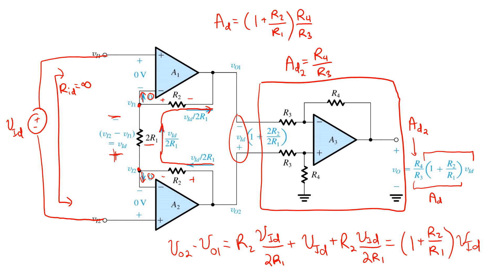This improved instrumentation amplifier has infinite input resistance and can have large differential gain. It shouldn't have any common mode gain at all. But even if there is some small mismatch in resistor values, the common mode gain should be modest because we're not amplifying the common mode signal in the first stage. In fact, the first stage is actually providing some significant common mode rejection, assuming there's some gain 1 plus R2 over R1.